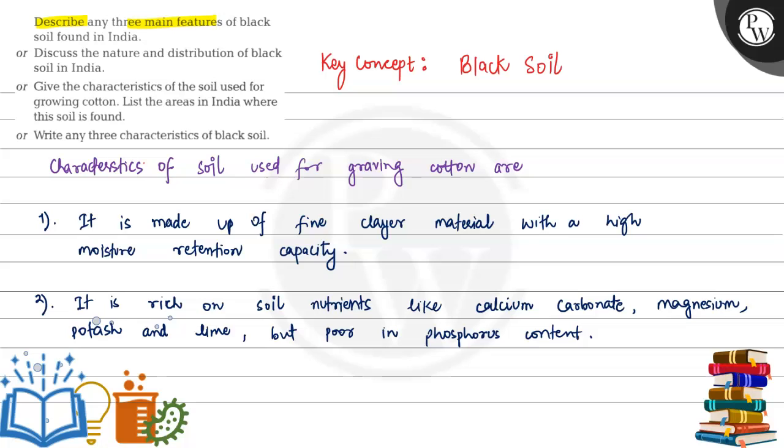describe any three main features of black soil found in India or discuss the nature and distribution of black soil in India or give the characteristics of the soil used for growing cotton. List the areas in India where this soil is found or write any three characteristics of black soil. So we have to write black soil characteristics in this question.